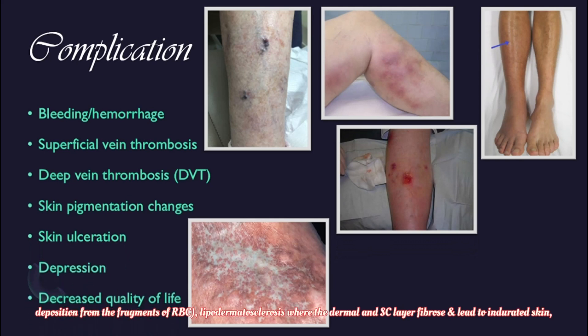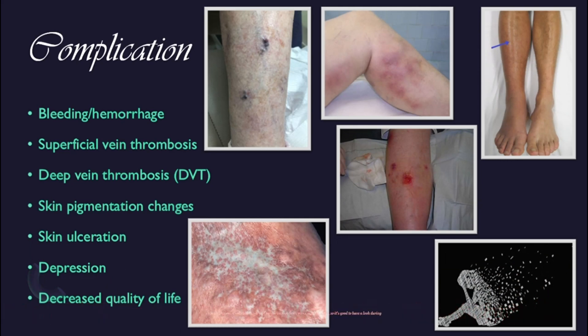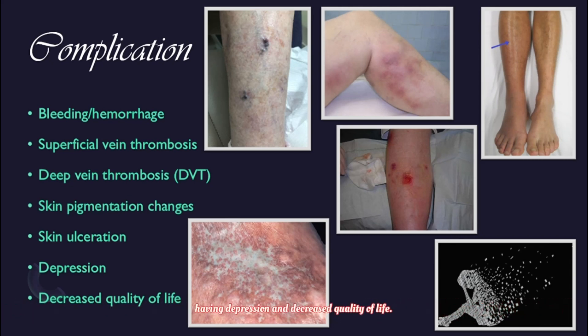Further complications include lipodermatosclerosis, where the dermal and subcutaneous layers fibrose and lead to indurated skin, and skin ulceration such as venous ulcers — three to six percent of people with varicose veins may have a venous ulcer, so it's good to check during examination. Also not forgetting the social impact on the patient, affecting their lifestyle such as causing depression and decreased quality of life.